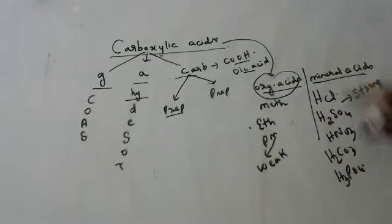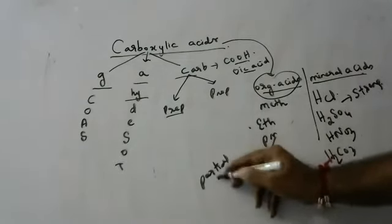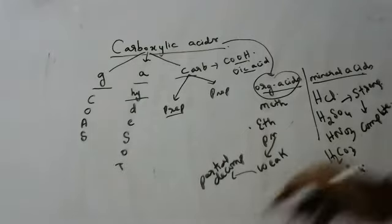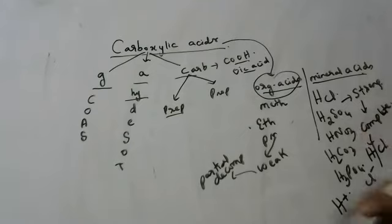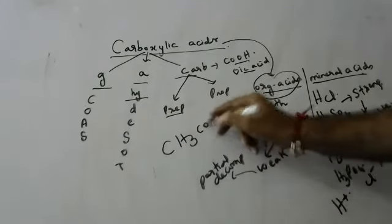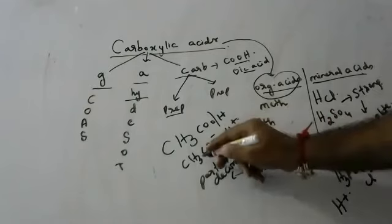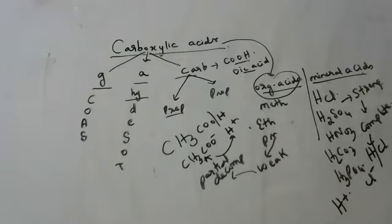Generally, mineral acids are strong and organic acids are weak. Why are they weak? Because they undergo partial dissociation. Why are mineral acids strong? Because they undergo complete dissociation. For example, HCl when you pass current breaks up completely into H+ and Cl- ions. Whereas acetic acid breaks up into CH3COO- and H+ ions — only some of the hydrogens are released, not all. That is called partial dissociation.